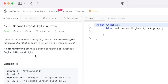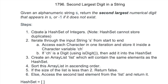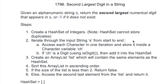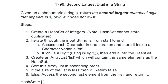Let's look at the steps to solve this problem. First, we create a hash set of integers. We use a hash set because it cannot contain duplicates — this helps us distinguish whether a second largest number exists. Next, we iterate through the string s from start to end to access each character. For each character, we check if it is a digit using the Character class's isDigit method. If it is a digit, we push it into the hash set.